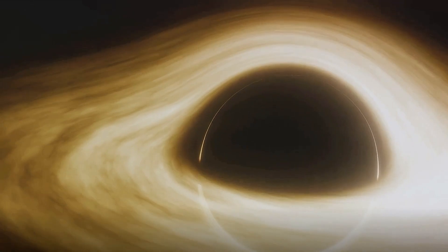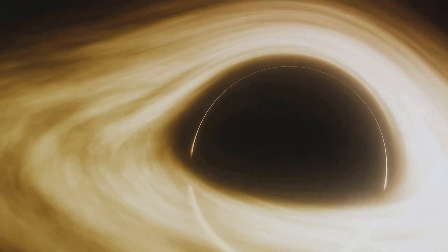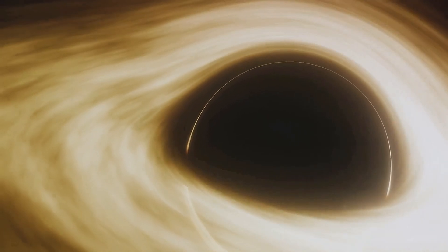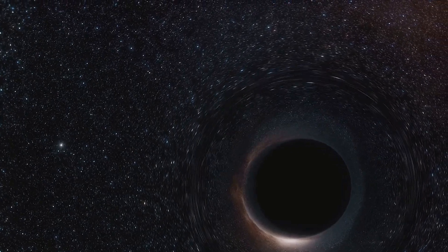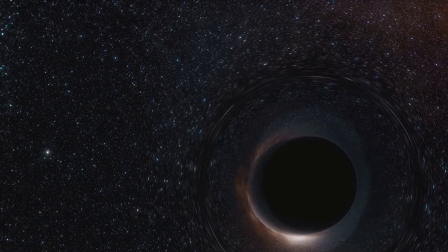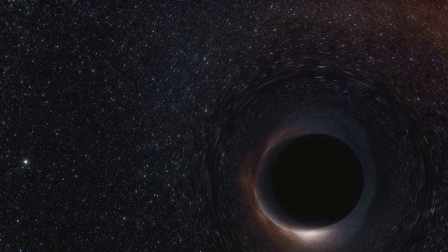What happens to the information of objects that black holes consume? This question lies at the heart of one of the most perplexing puzzles in modern physics, the information paradox, a conundrum first introduced by the legendary physicist Stephen Hawking. Imagine every book, every piece of data you've ever encountered. Information as we understand it is never lost, not even when you burn a book. The ashes still contain the information, merely transformed. But black holes, those enigmatic behemoths of space, seem to play by different rules.